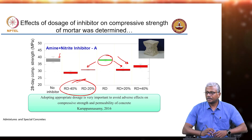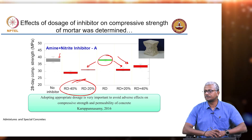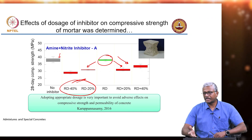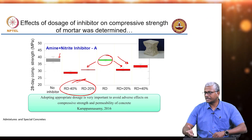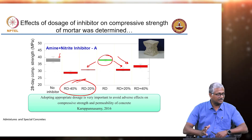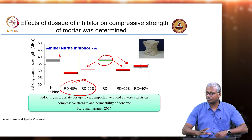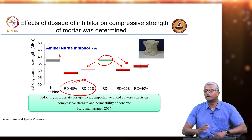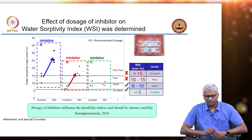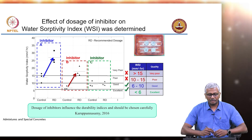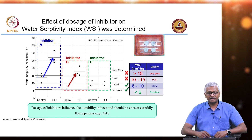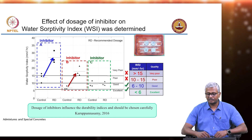I had talked about how usage of chemical admixtures can lead to side effects which have to be properly designed for. We talked about how strength can sometimes be affected if you are overdosing the corrosion inhibitor. There is another data from our laboratory studies where the durability indices were affected by the presence of certain types of inhibitors.